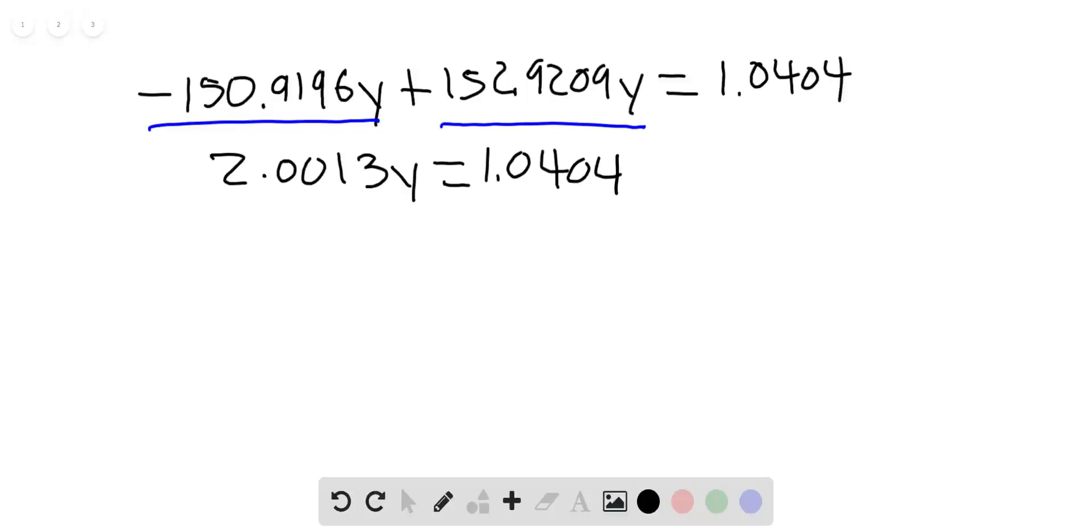Now it's just a matter of dividing both sides by the 2.0013. So if I divide this side by 2.0013, that will cancel, and this side by 2.0013, I'm now left in terms of y.